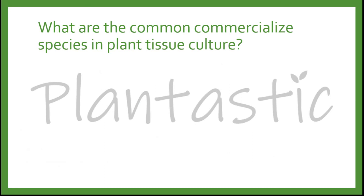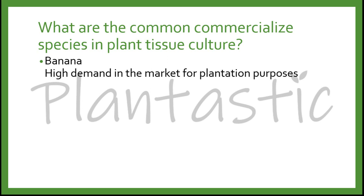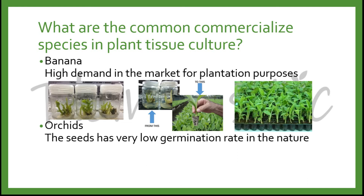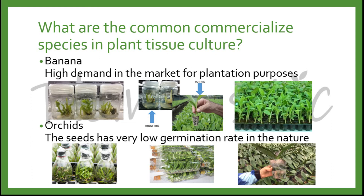What are the most common commercialized species in plant tissue culture? The answers are banana, known as Musa species — banana tissue culture is highly demanded in the market for plantation purposes due to the high demand for bananas. Secondly, orchids, which are cultivated as ornamental or medicinal plants. Orchid seeds have a very low germination rate in nature because they lack endosperm, so in nature they must co-culture with certain fungi to germinate. However, in plant tissue culture technology, they can be germinated easily.